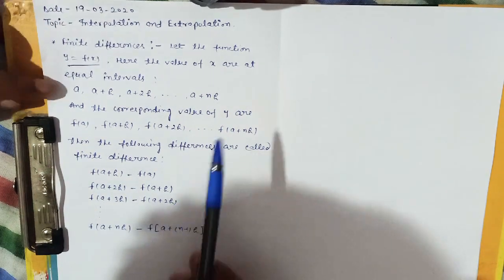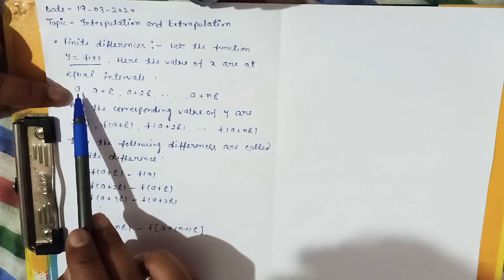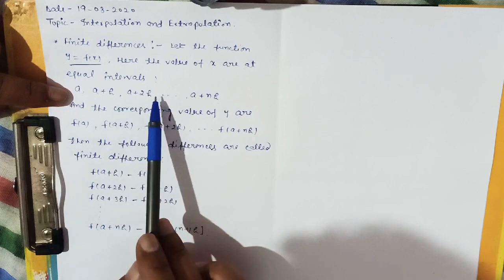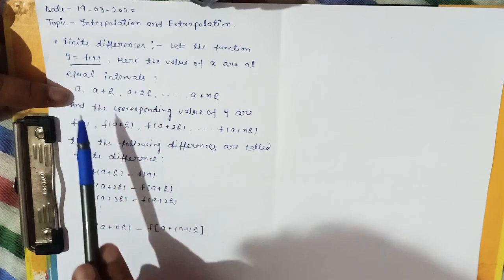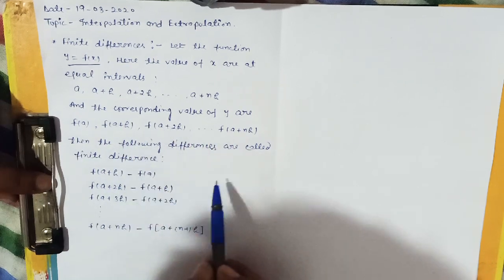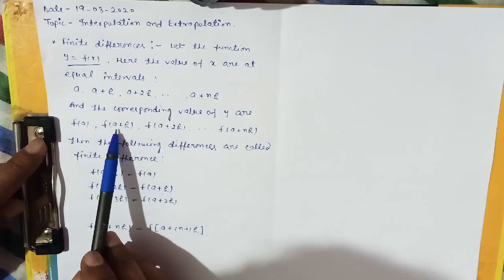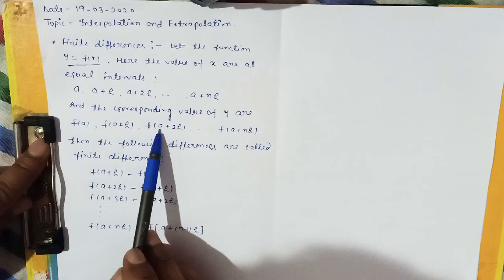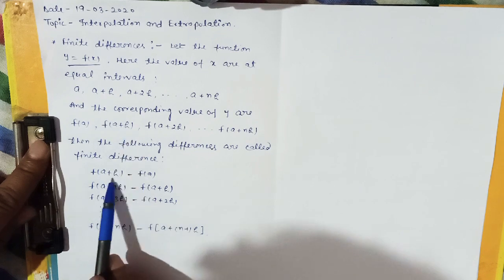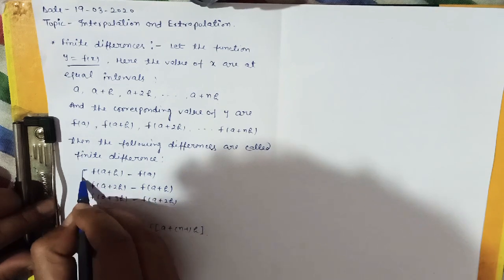That means if you know different x values at equal intervals — a, a+h, a+2h — and you know the corresponding function values, then the successive differences such as f(a+h) minus f(a) give the values of finite differences.